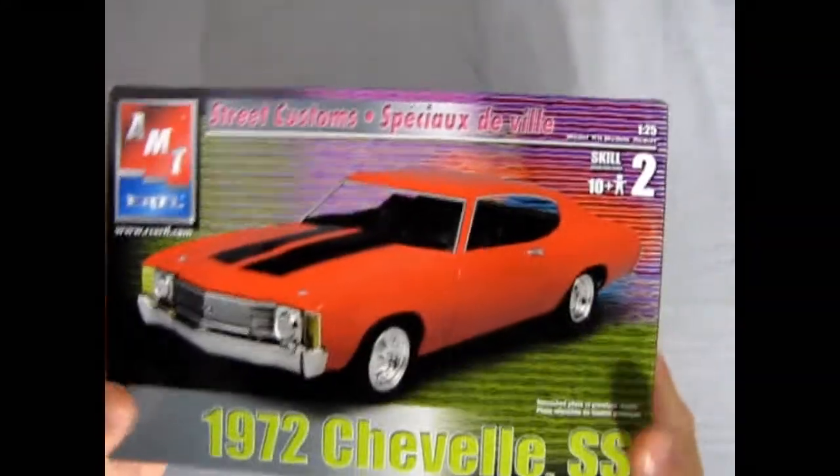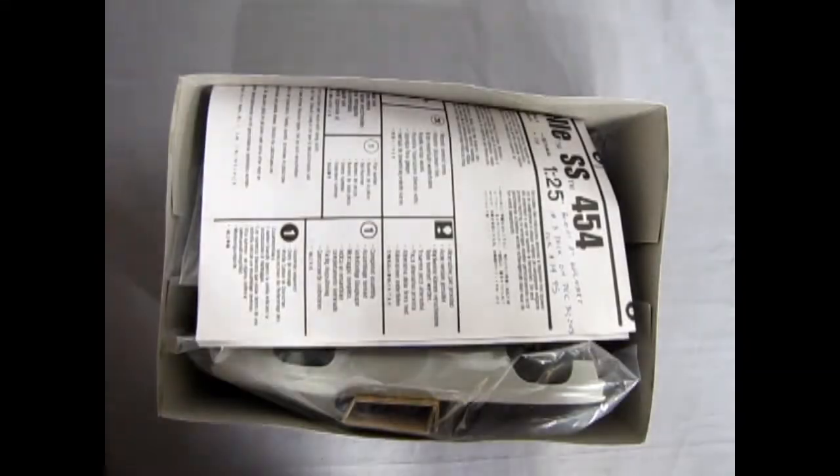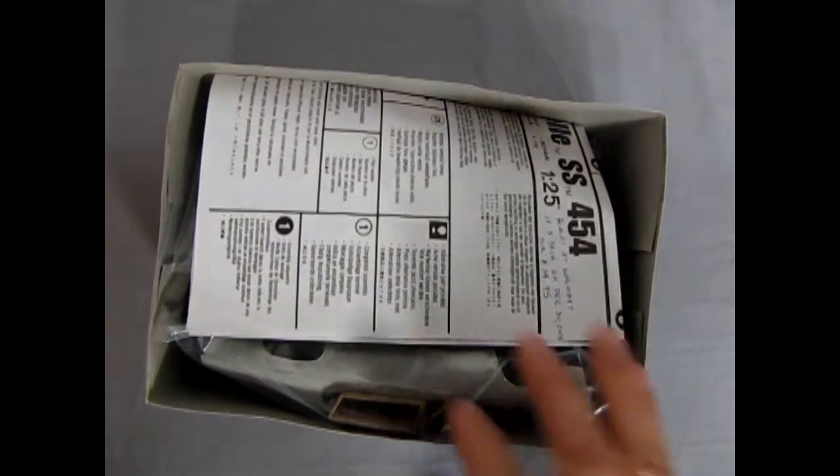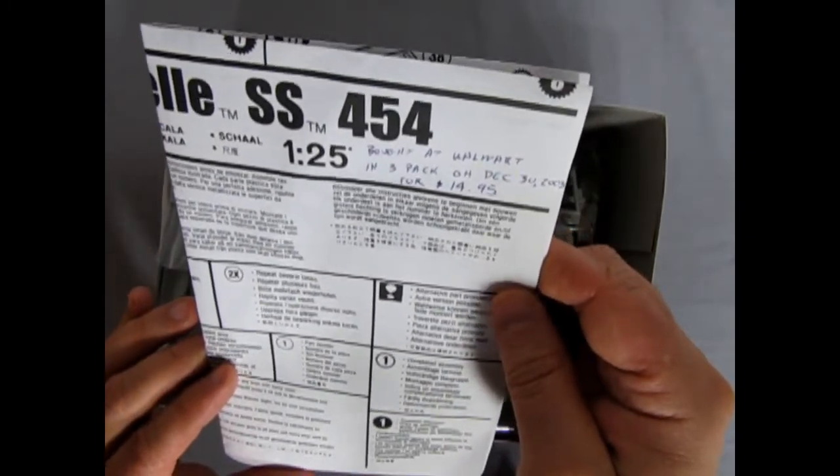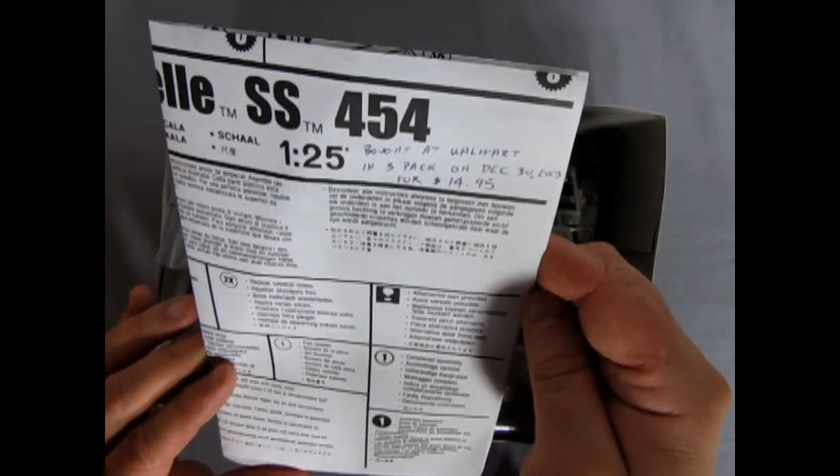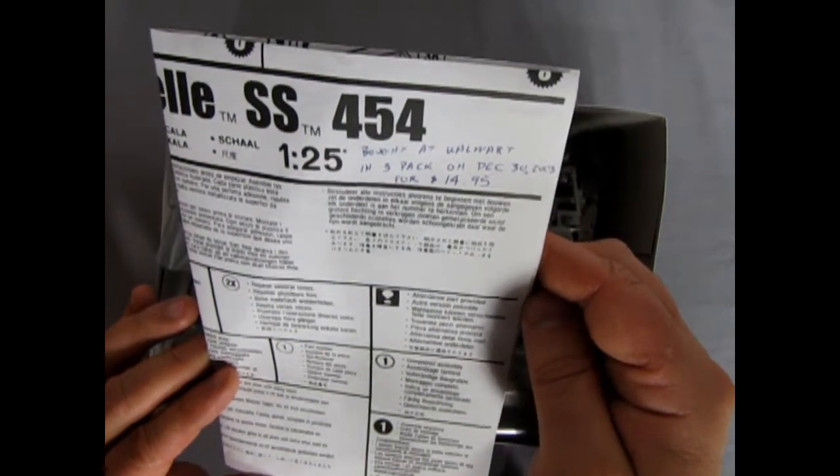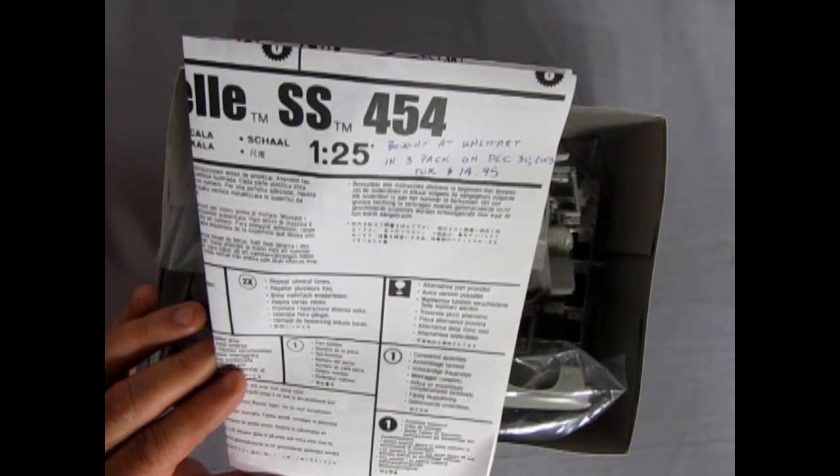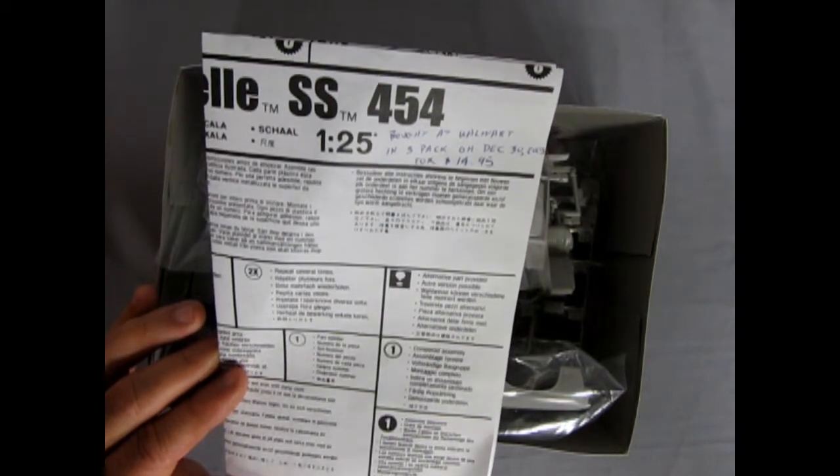Alright, let's flip this around here and get the low down as we rip the lid off this box. Don't worry, I'm not going to throw it across the room. Oh hey, I've got some old notes on here. Bought at Walmart in a 3 pack on December 30, 2003 for $14.95. There's 3 cars in there as well as the paints. So take $14.95 and divide it by 4 and that's how much I paid for this thing.